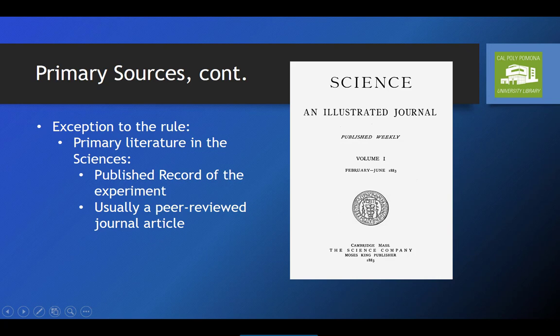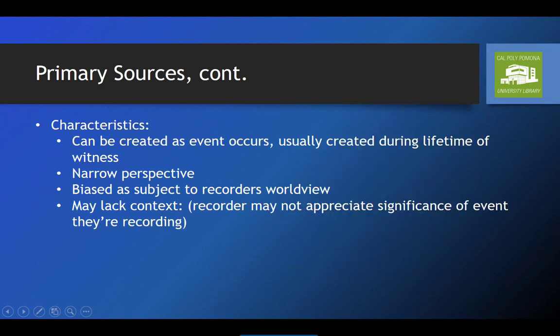In the sciences, primary literature is defined as the peer-reviewed record of an experiment or study, and is usually published as a journal article. In the modern era, primary sources may be created as the events they chronicle occur. However, prior to the invention of the technologies that made live recording possible, they were recorded after the fact, but as they were first-hand accounts, they generally had to be recorded within the lifetime of the witnesses.